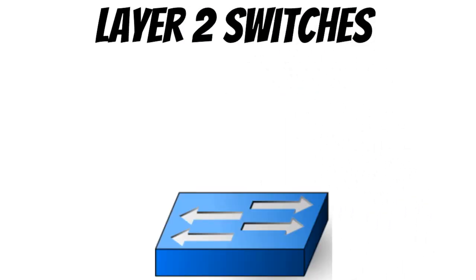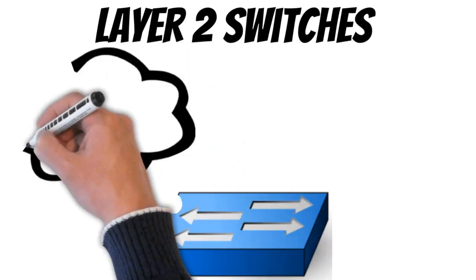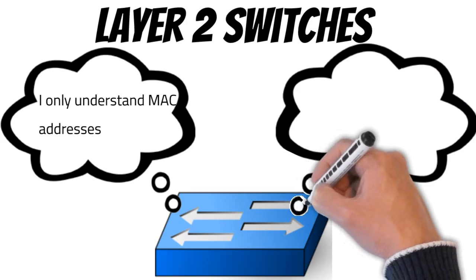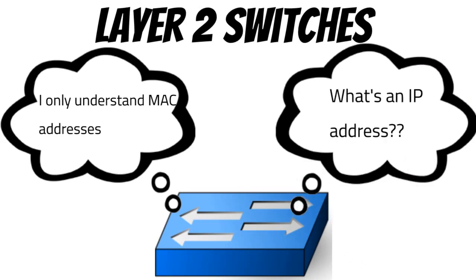Let's dive deeper into the logic of this model, starting with layer 2. Layer 2 switches operate at the data link layer. Not only is the switching happening at the hardware level with ASIC technology, but at this layer devices use their MAC addresses to communicate and forward data packets. It's completely ignorant of IP addresses at this layer.